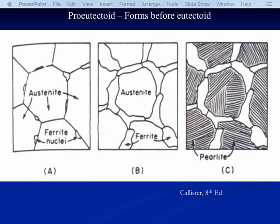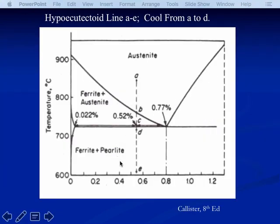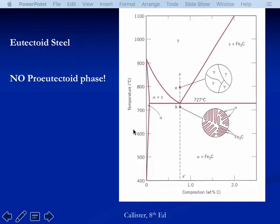This is a 0.52 weight percent carbon steel. It is below the eutectoid in composition, so this is a hypo-eutectoid steel, and the pro-eutectoid phase is ferrite — what forms before we cross the eutectoid. At the eutectoid composition itself, what is the pro-eutectoid phase? There is none. You cool down, you have austenite, then you have pearlite. There is no pro-eutectoid phase at the eutectoid — it's a very simple structure.